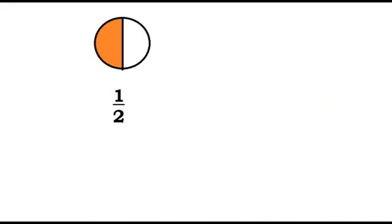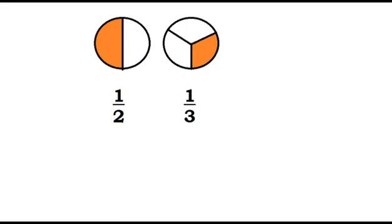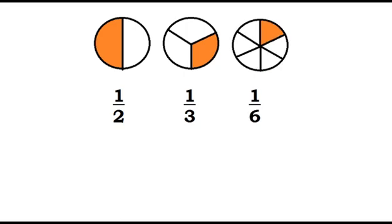Let's now go to adding dissimilar fractions. We have 1 half, 1 third, and 1 sixth. They are called dissimilar fractions because they have different denominators. But by just looking at the figures, we can say that their sum is 1 or 1 whole.